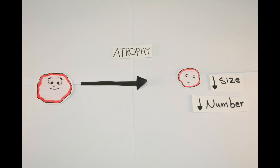Simply, atrophy is getting smaller, either by decreasing the number of cells or decreasing their size, and both will lead to shrinkage of the organ. This subsequently leads to reduction in physiological function, decreased synthesis, and increased catabolism.